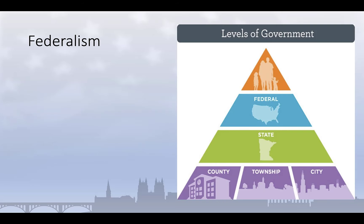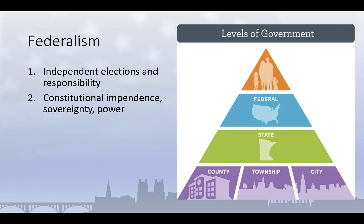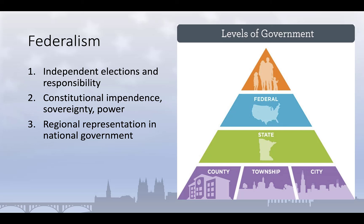We can identify three basic principles of federalism — requirements to be considered a federal system. First, in a federal system, the national and subnational governments must be independently elected and directly responsible to the people. Second, the Constitution must establish the independence of each level, guaranteeing the sovereignty of each and dividing responsibilities for governance between them. And finally, federal systems must have some way to represent regional or subnational preferences within the national political institutions. Most frequently, this is accomplished through the legislature, where a second chamber is usually structured to provide representation to the subnational units. In both Germany and the United States, for example, the upper chamber of the legislature provides for representation of the subnational governments. This is a common structural feature of federal systems.